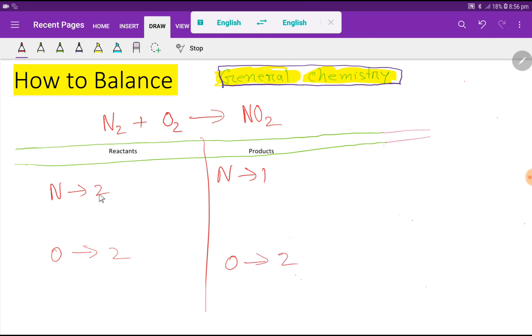To balance this reaction means we have to balance the number of nitrogen and oxygen from both sides. In the left hand side we have 2 nitrogen but in the right hand side we have 1 nitrogen. So to balance the nitrogen I can simply multiply by 2 that gives me 2.